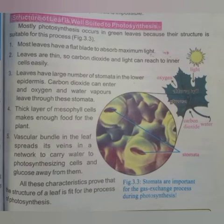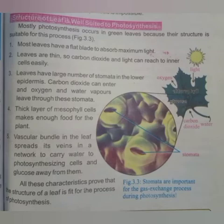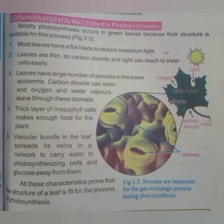Point number three: leaves have a large number of stomata in their lower epidermis. Carbon dioxide can enter and oxygen and water vapors leave the leaf through these stomata. CO₂ enter ہوتا ہے اور oxygen اور water vapors stomata سے نکل جاتے ہیں۔ In the leaf there are two layers: one is the upper epidermis and the second is the lower epidermis. Stomata and guard cells are present in the lower layer of the epidermis, and through this process carbon dioxide enters and oxygen and water vapor leave.